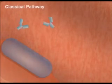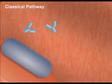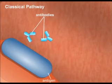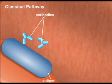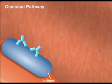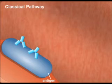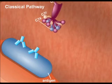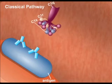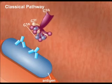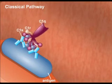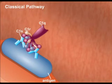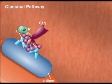The classical pathway requires interaction of antibodies with an antigen, usually on a cell surface. Following binding of antibodies to cell surface antigens, C1, which is composed of three proteins — R, Q, and S — attaches to the constant region (Fc) of adjacent antibodies through its C1Q subunit.